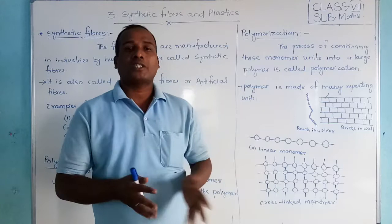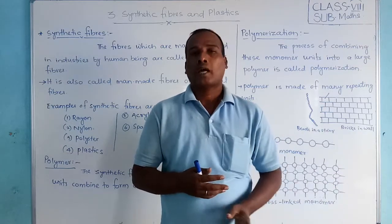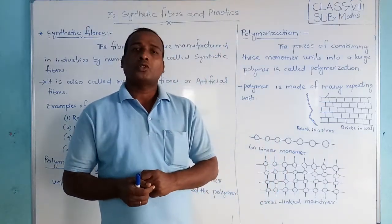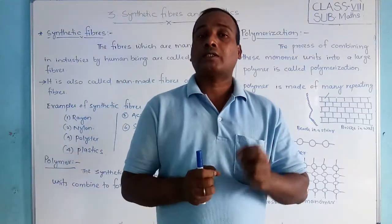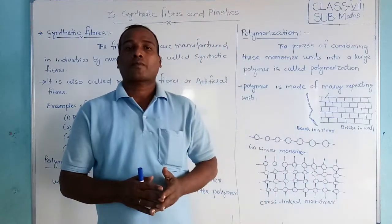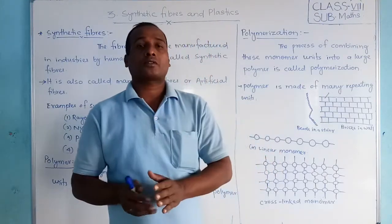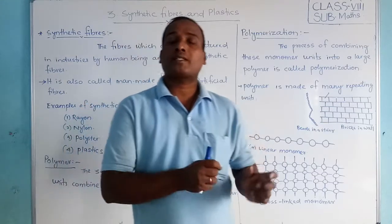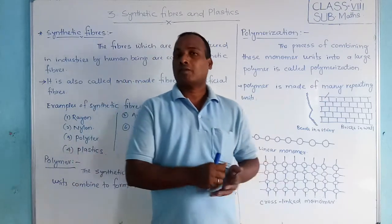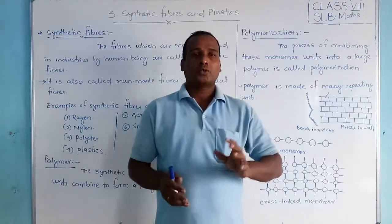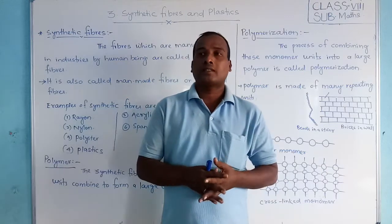So students, what are synthetic fibers? We have learned that fibers are two types: one is natural fibers, which we get from nature — plants and animals — and the second one is synthetic fibers. The fibers which are manufactured in industries by human means are called synthetic fibers. These are also called man-made fibers or artificial fibers.